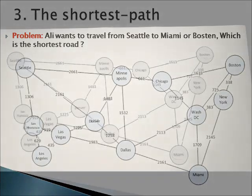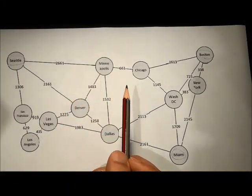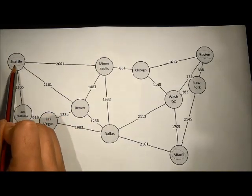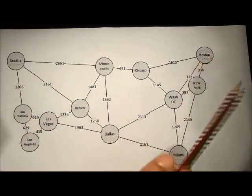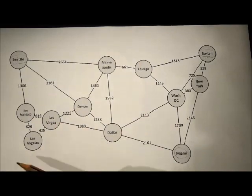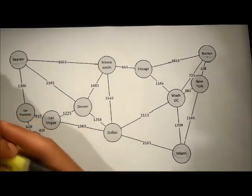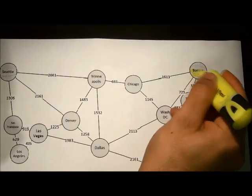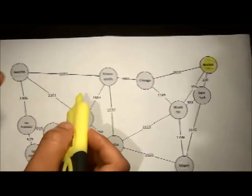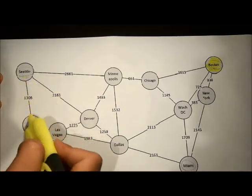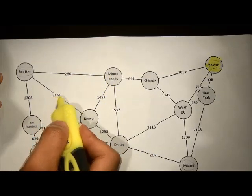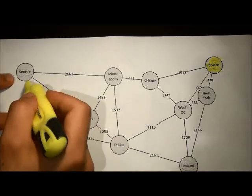Here we have a problem about the shortest path method. A driver named Ali wants to travel from Seattle to two cities — either Boston or Miami — and he needs to know the shortest distance to each. Let's consider he wants to go from Seattle to Boston first. Leaving Seattle, he has three roads: 2661 miles, 2161 miles, and 13. Of course he will go with the 13.